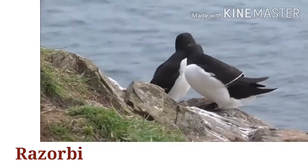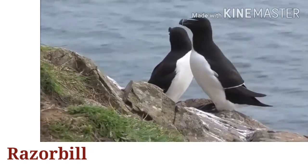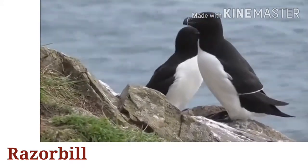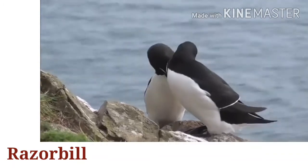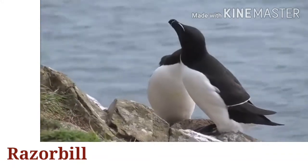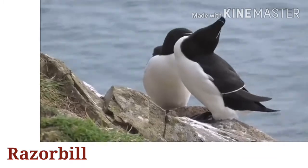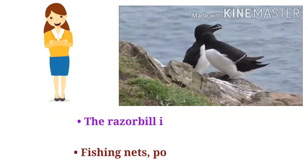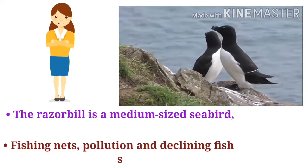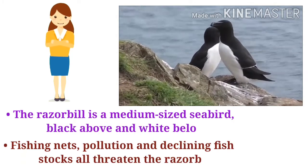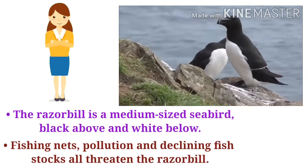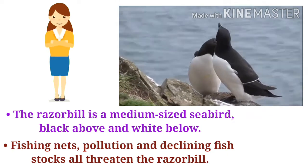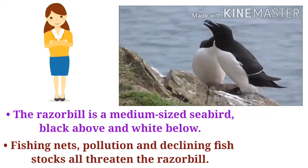Who is this? This is a razorbill. R-A-Z-O-R-B-I-L-L. Let's introduce the razorbill. The razorbill is a medium-sized seabird, black above and white below. Fishing nets, pollution, and declining fish stocks are threatening the razorbill.